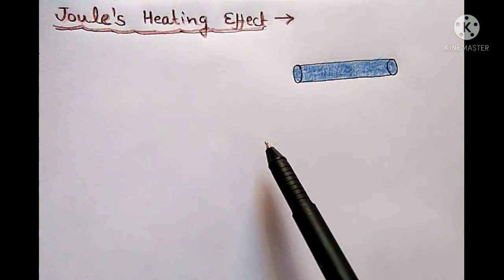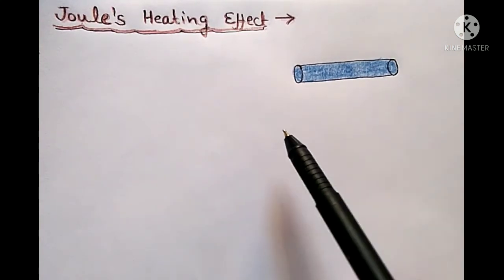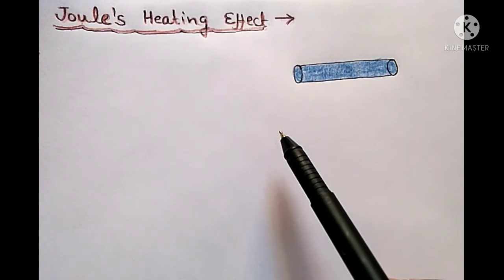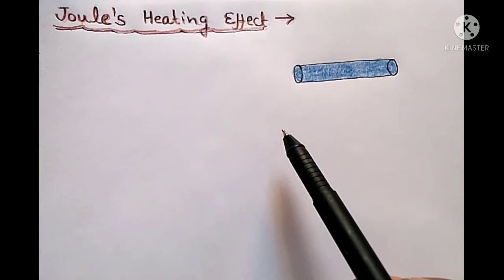Hello everyone, today we are going to study Joule's law of heating effect. As we know, when there is a current flow through an electric heater, then the rod of the heater glows and produces heat.